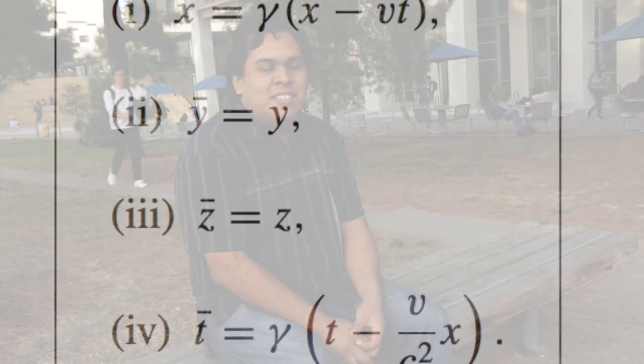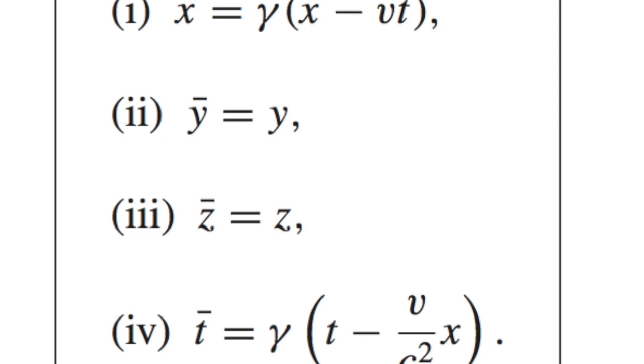One of the consequences of not really knowing an underlying theory that unites gravity and quantum mechanics is that this underlying theory might, at higher energies, violate the Lorentz symmetry that we otherwise see in the world around us.